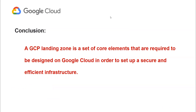In conclusion, a GCP landing zone is a set of core elements required to be designed on Google Cloud in order to set up a secure and efficient infrastructure. These elements include identity provisioning, resource hierarchy, network, security controls, monitoring and logging, backup and disaster recovery, compliance, cost efficiency and controls, API management, and cluster management. It is important to have a clear understanding of these elements and how they work together in order to efficiently set up and maintain a GCP landing zone. Thanks for listening — please like and subscribe to learn more about GCP.